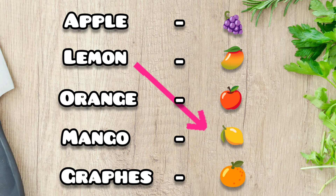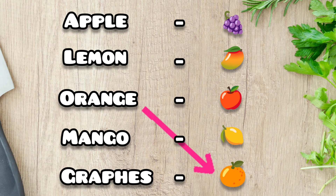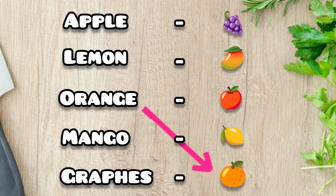The third question is for orange. Orange is matched to the fifth picture on the right side column. The orange color fruit is the fifth picture — that is the correct answer.